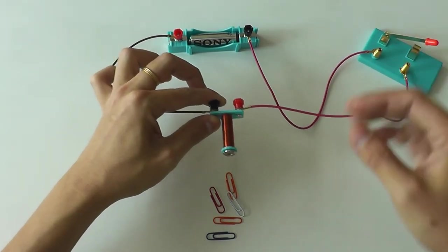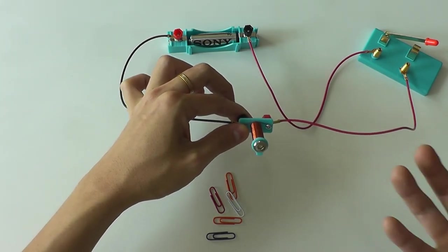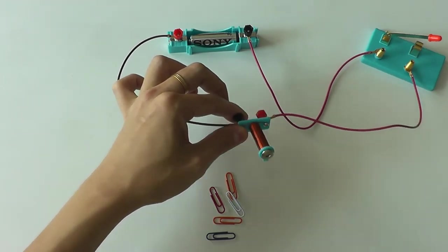So when I pass electricity current through it, it becomes a magnet. When I stop the electricity current flow, it will be demagnetized and all the paper clips will drop.